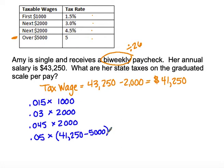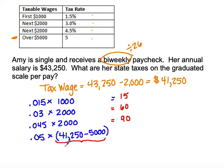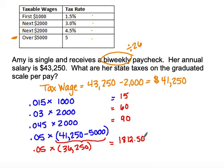When we calculate this out: the first 1.5% gives $15, the second 3% gives $60, and the third tier at 4.5% gives $90. For tier four, she's left with $36,250 at 5%. When we calculate that, this is where the big chunk comes in — she has to pay $1,812.50 at that fourth tier.